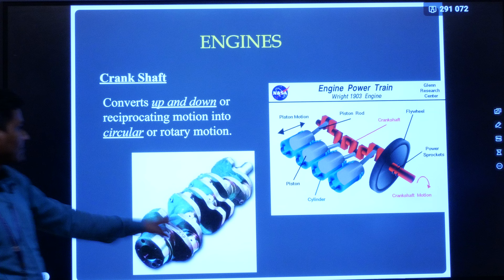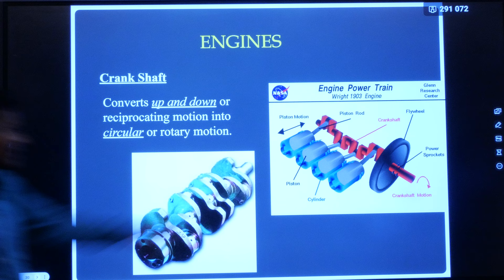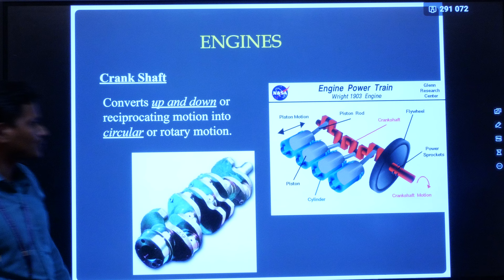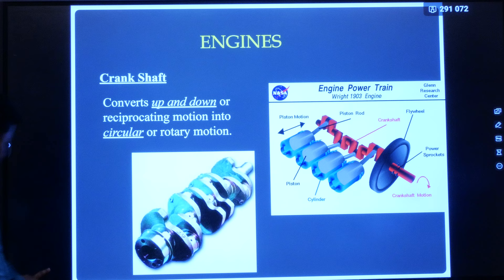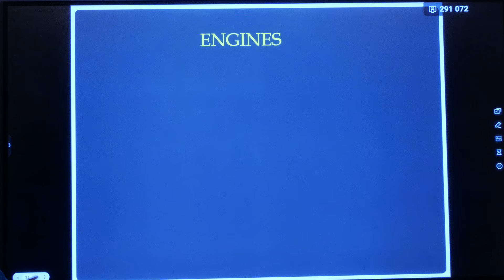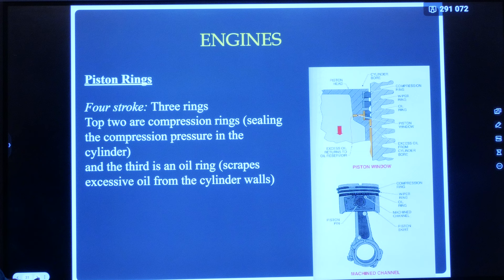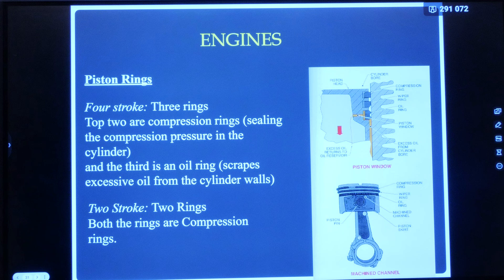The crankshaft converts rotary motion into reciprocating motion. Each piston has piston rings, also called compression rings, which are used for sealing the compression pressure inside the cylinder.